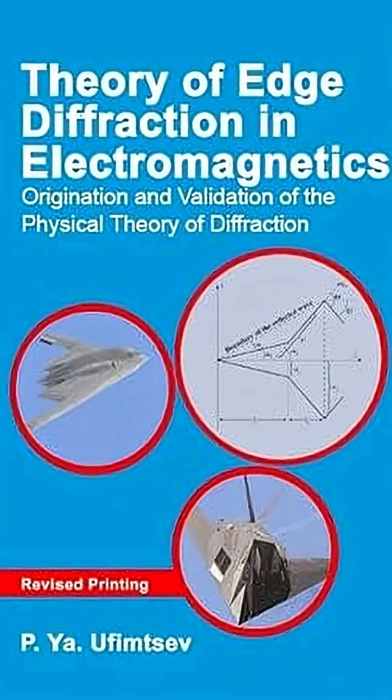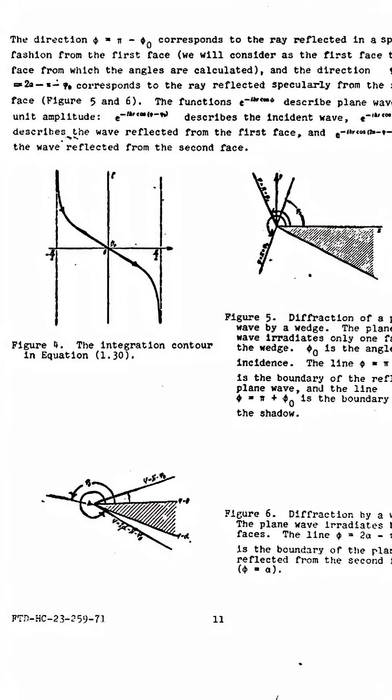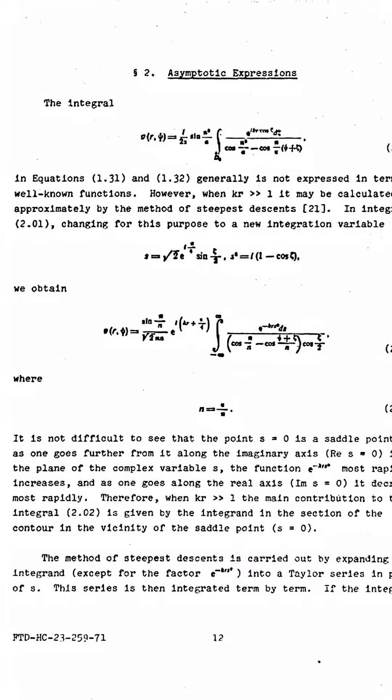In 1971, Soviet physicist Piotr Ufimtsev published a book, The Method and Edge Waves in Physical Theory of Diffraction. In this book, he created a mathematical model describing how electromagnetic waves scatter off various obstacles such as edges and corners.